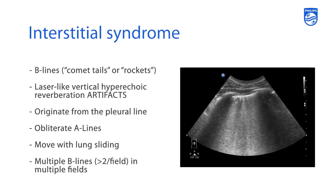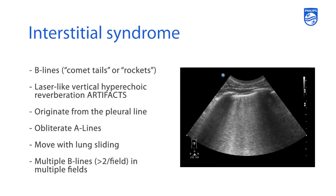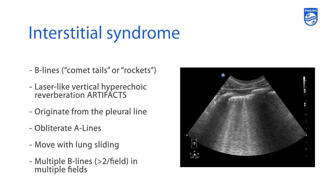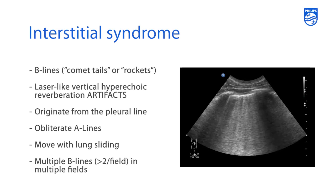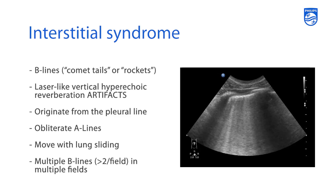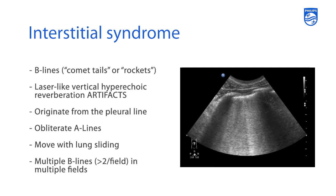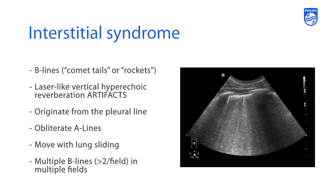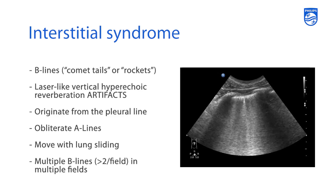Interstitial syndrome, when evaluated with lung ultrasound, is a syndrome that will allow for the visualization of artifacts. These artifacts predominantly are described as B-lines, and they're these comet tails or rockets that are laser-like, vertical, hyperechoic reverberation artifacts that start from the pleural line and extend all the way down to the bottom of your imaging.